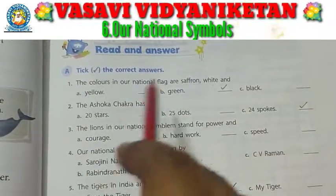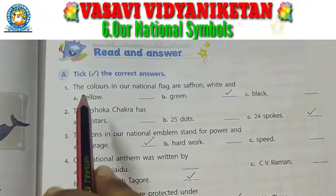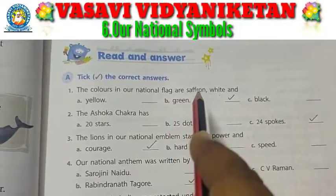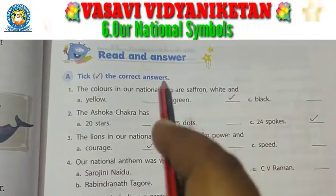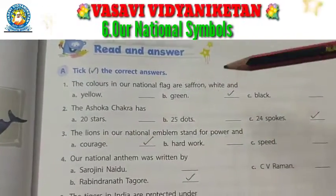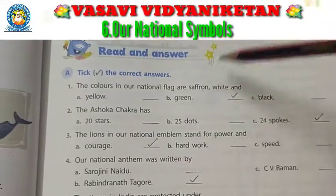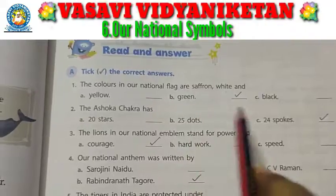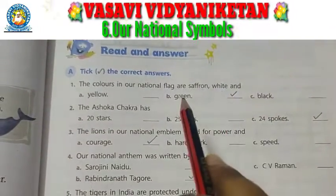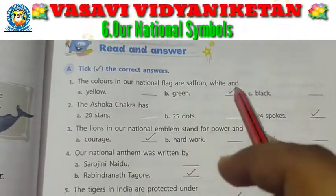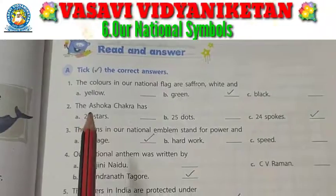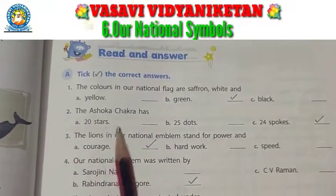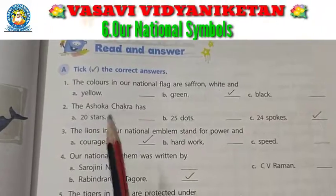Tick the correct answers. First one: the colors in our national flag are saffron, white, and — so our national flag has three colors. First is saffron, second is white, so what is the third one? Yellow, green, or black? The answer is green. Tick here.